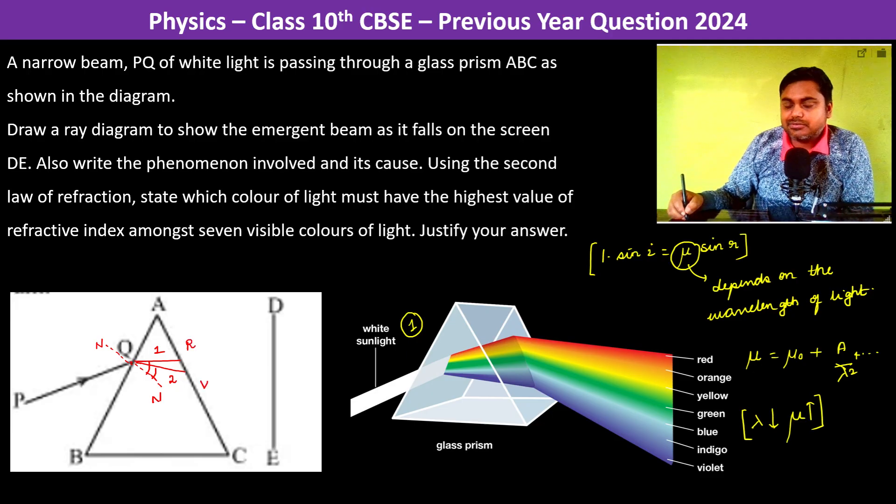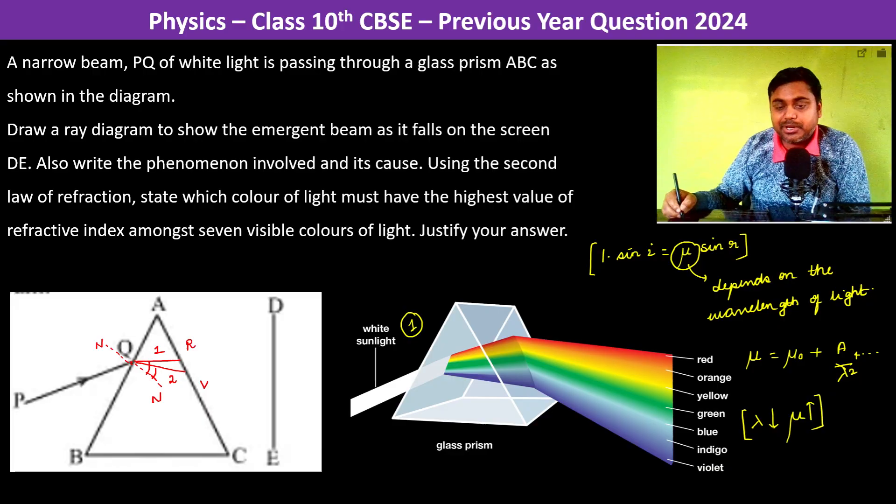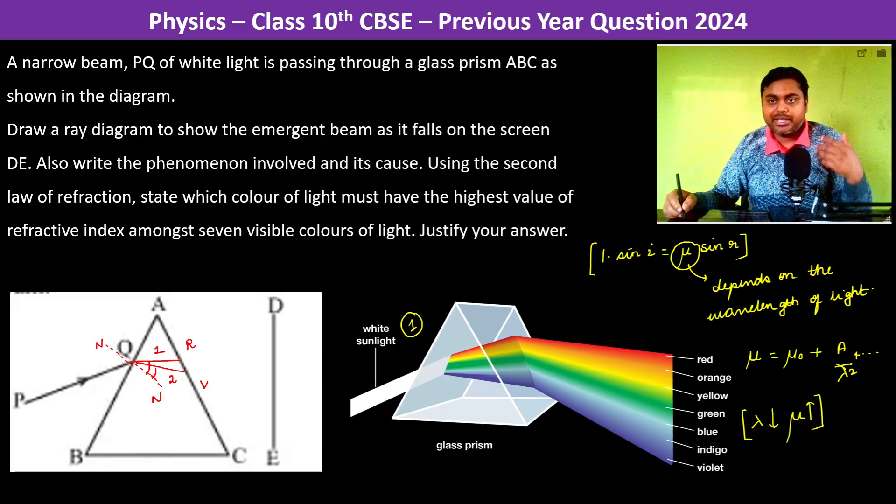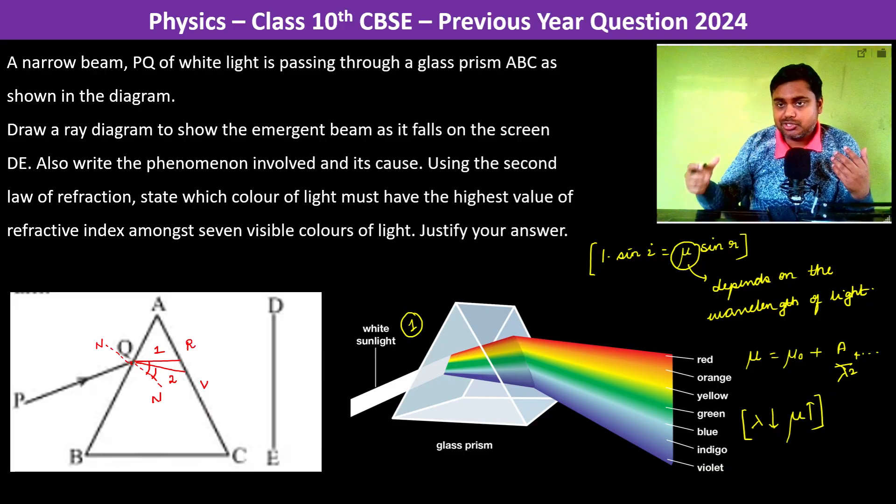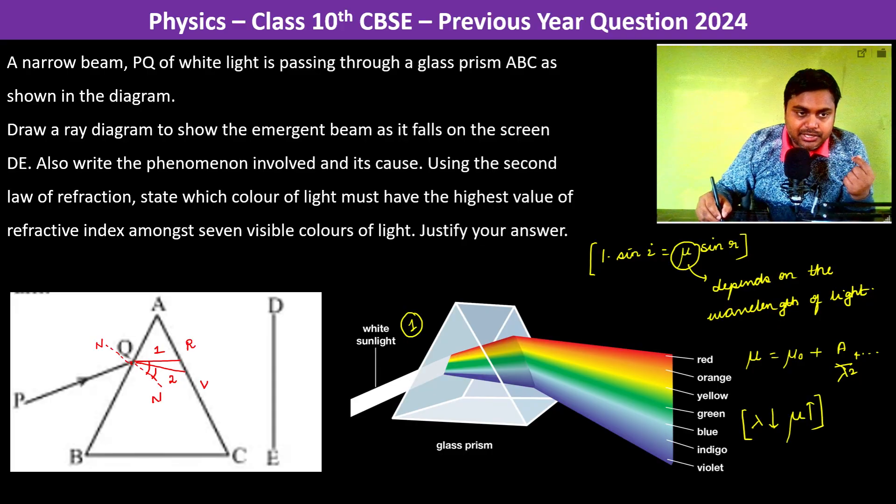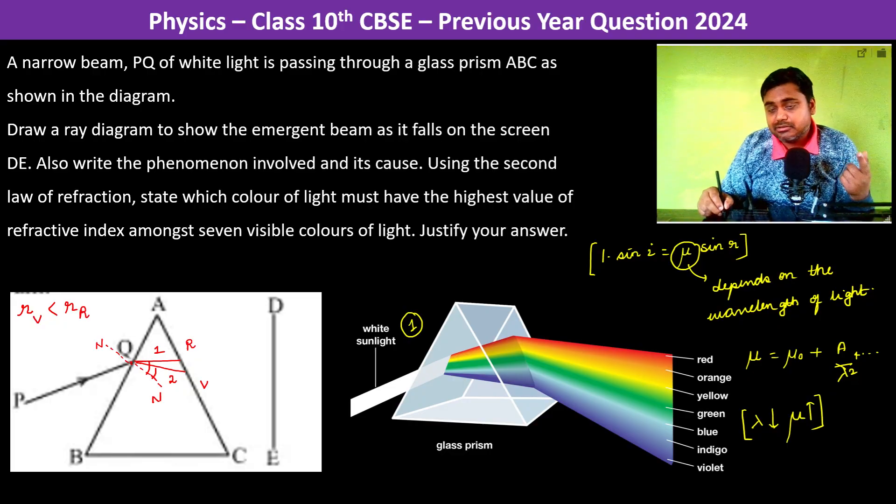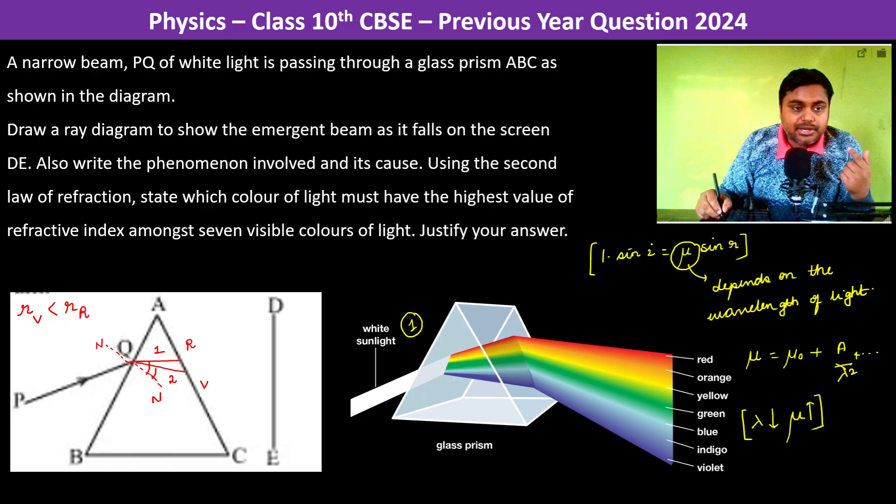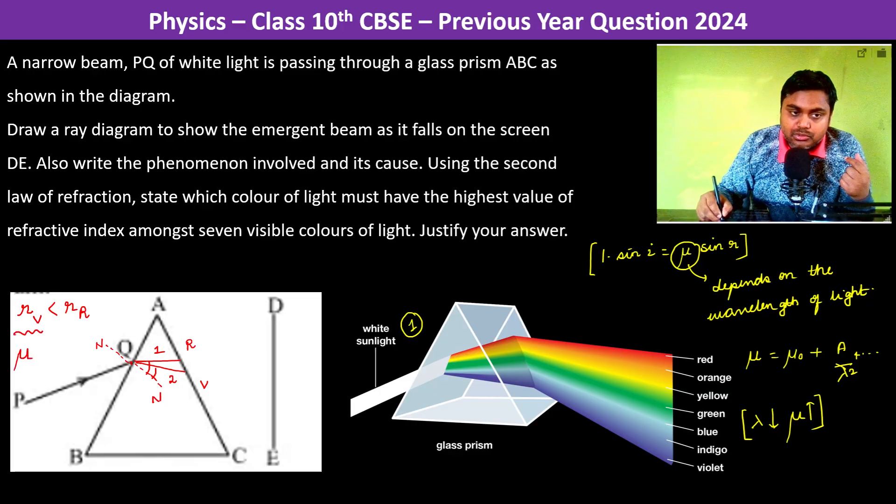For ray 2 the angle is less, and obviously we know that this is the red ray and this is the violet ray, as we have obtained in the diagram of the beam which is emergent. So here if you see, we can write that the angle of refraction for violet is less than the angle of refraction for the red ray.